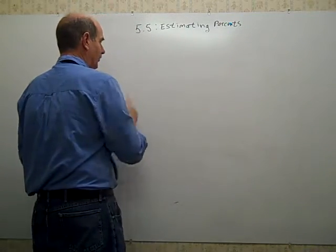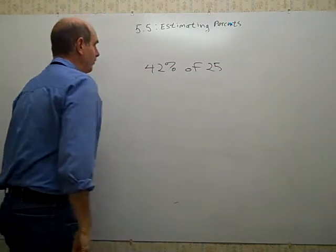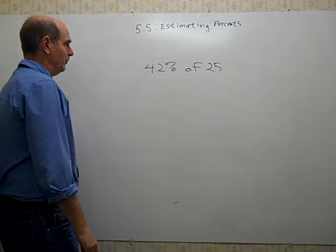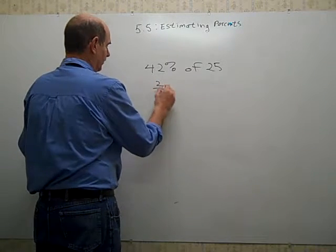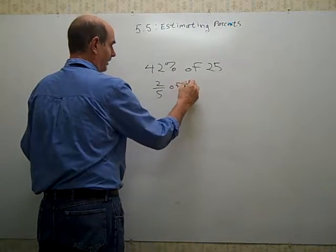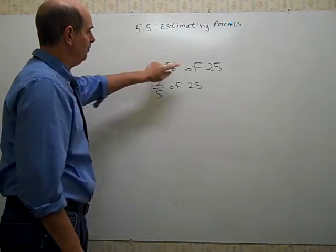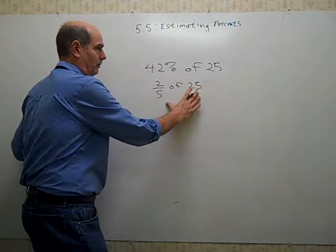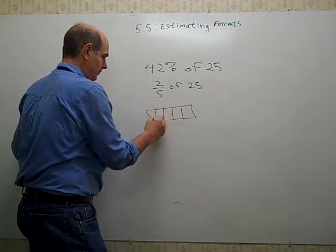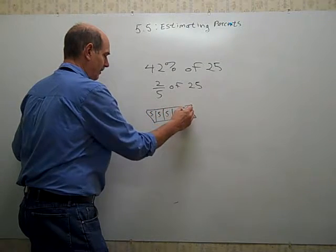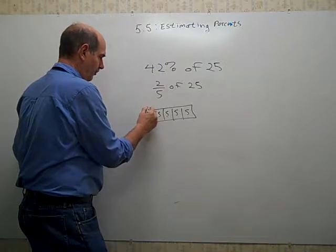Sometimes we're going to just round off our numbers and use compatible numbers to get an estimate. So we want to know 42% of 25. We might remember that 40% is two-fifths. So we might think of it as two-fifths of 25. So we've rounded this number. We're finding a compatible number, a number that's close to but not exactly the same as 42%, but it goes pretty well with the 25. Because you can split 25 into fifths very nicely, and each one-fifth would have five. And one-fifth is five, so two-fifths would be two-fives, or ten.